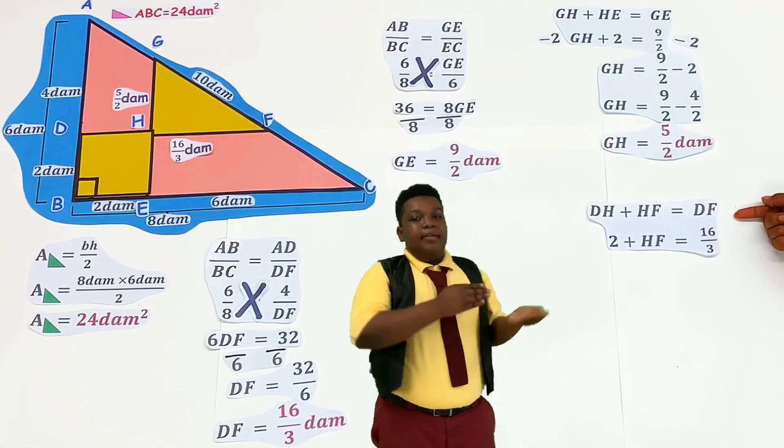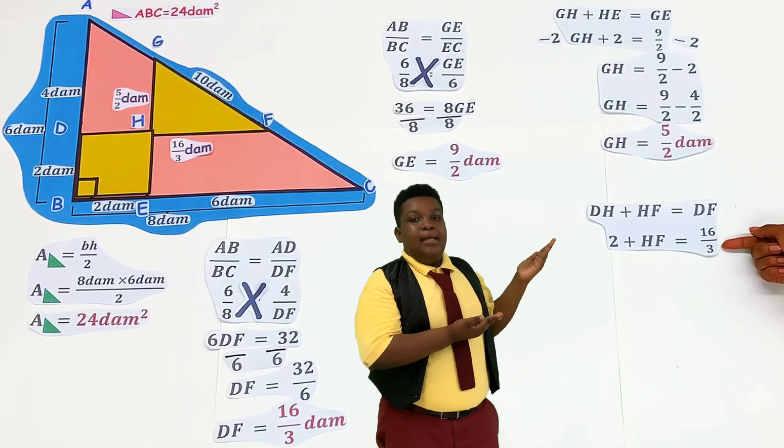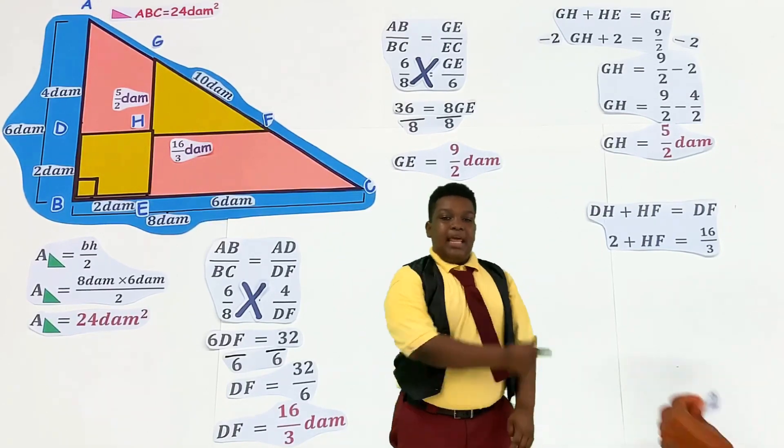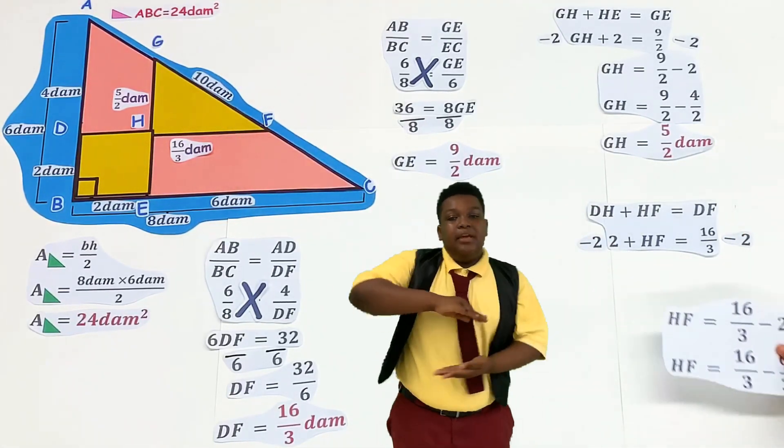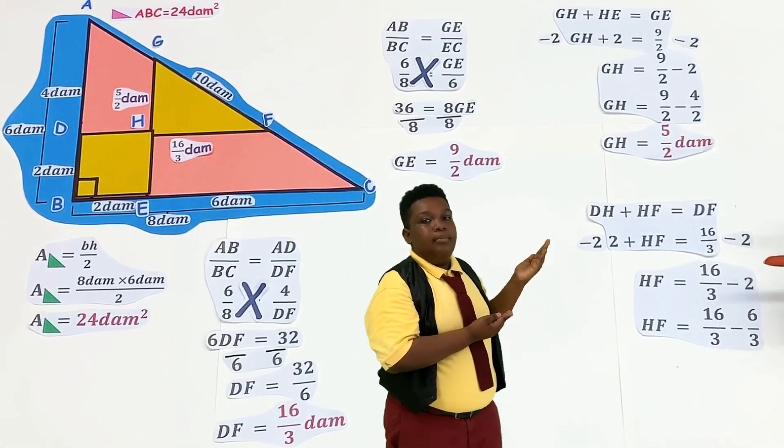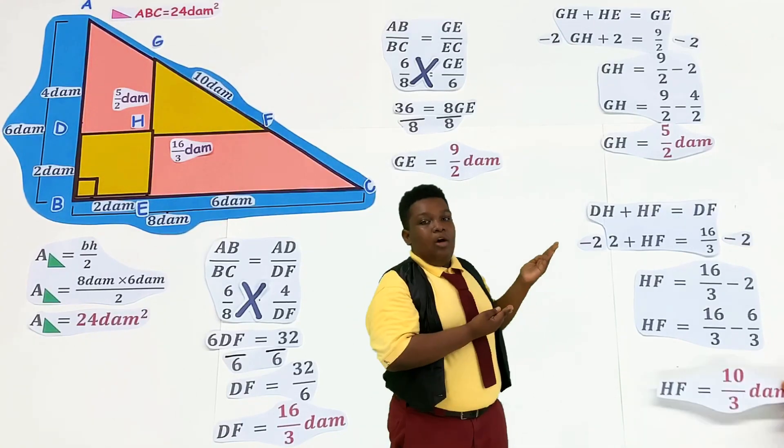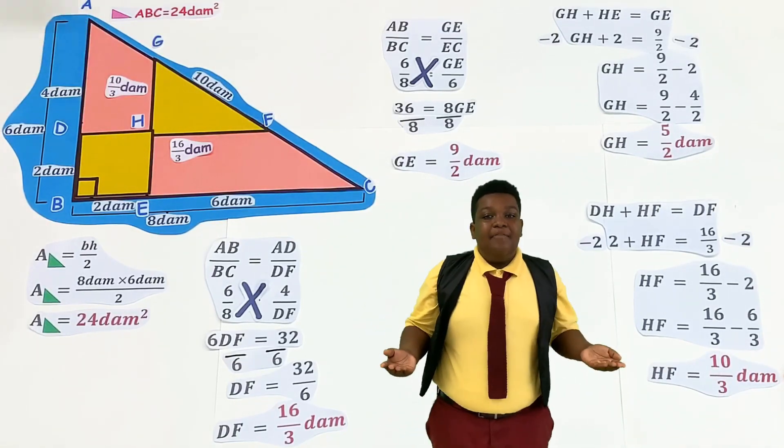Great job! Since the sum of DH and HF equals DF, it follows that 2 plus HF is equal to 16 over 3. To isolate HF subtract 2 from both sides. HF is equal to the difference of 16 over 3 and 2. 16 over 3 minus 6 over 3 is equal to 10 over 3. HF is 10 over 3 decimeters!